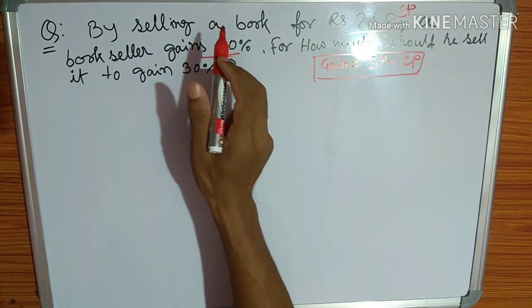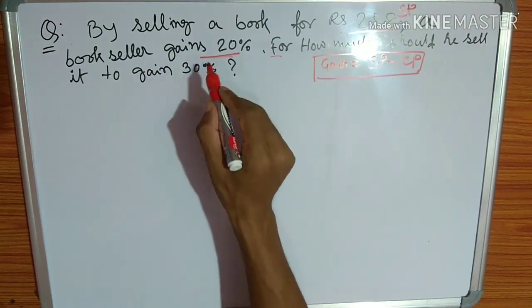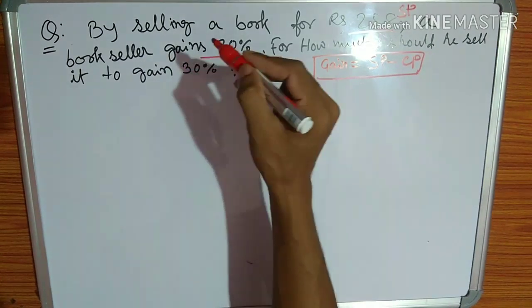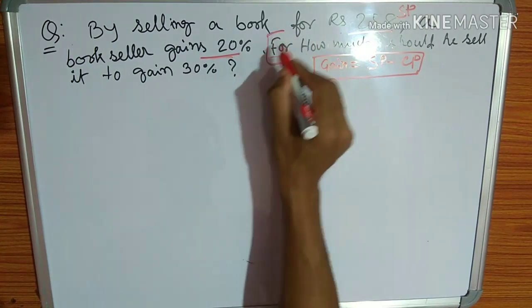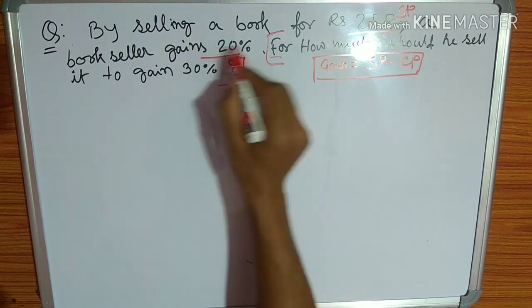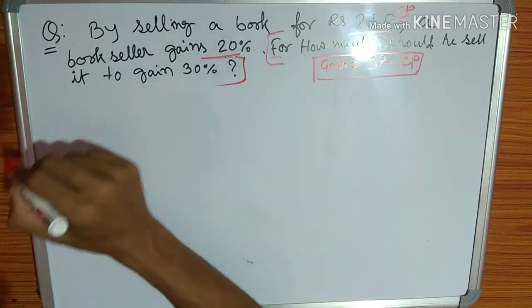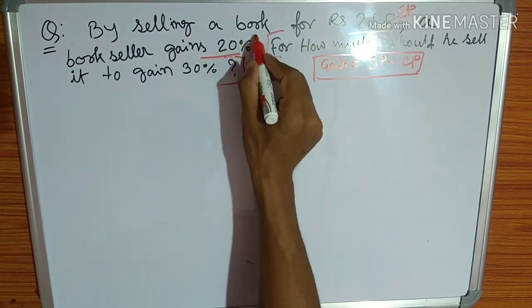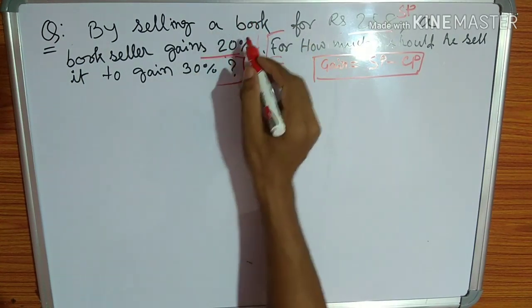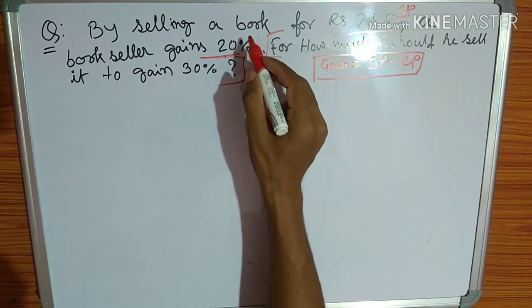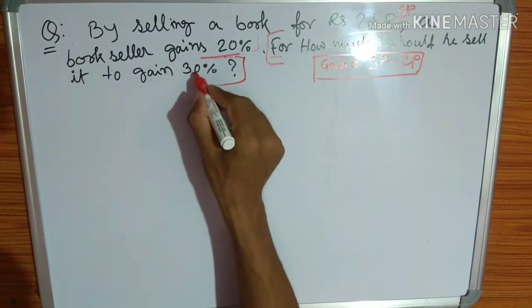The cost price is what we need to find first. The selling price is 258 rupees. For how much should he sell it to gain 30 percent? If the gain is 30 percent, what will the selling price be? That is the second part of the question.